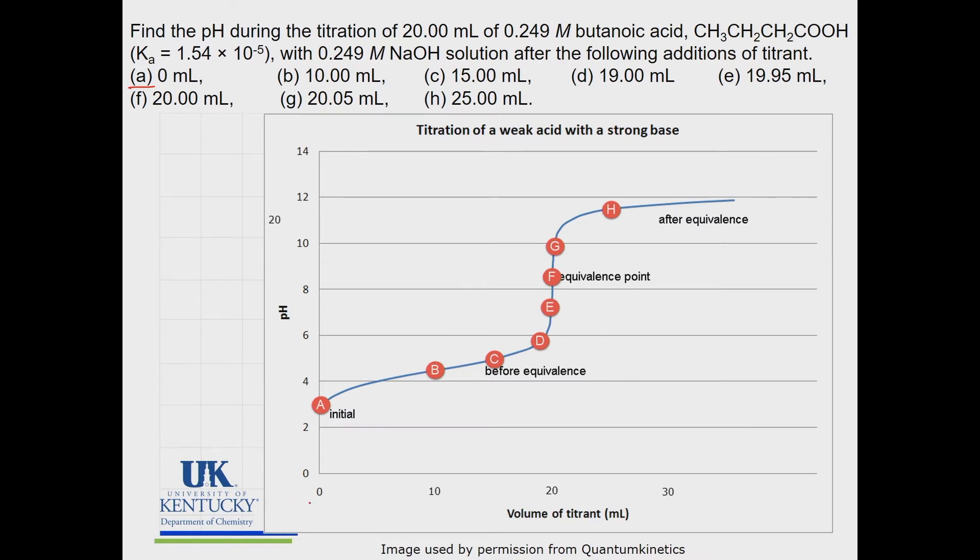These are the amounts of the base that you're adding. A is where you haven't added any base. Its initial pH is determined only by the concentration of that weak acid, so this is merely a weak acid problem.